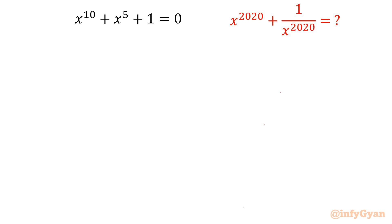Hello everyone. Welcome to Infigyan once again in this very exciting video of algebraic challenging equations where we are going to simplify x power 2020 plus 1 over x power 2020, if x power 10 plus x power 5 plus 1 equals 0. I am going to present three methods. Let's get started by writing the first method and one identity.